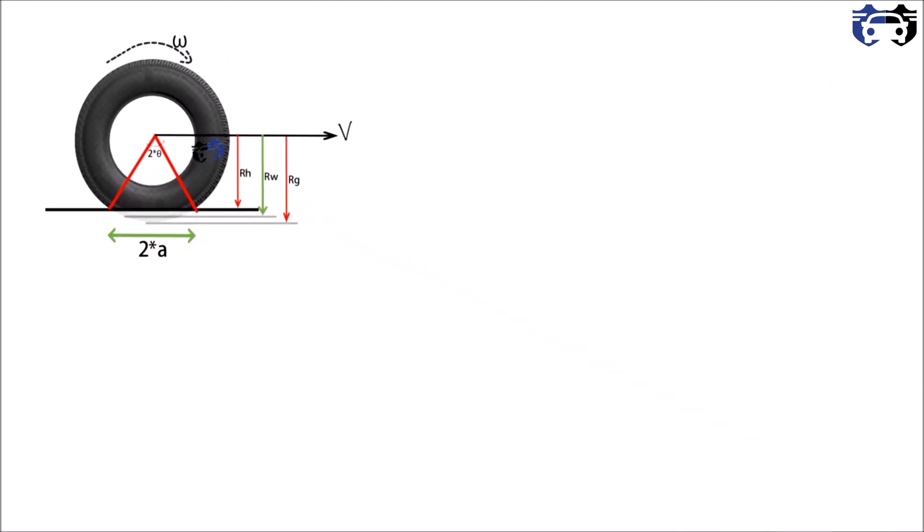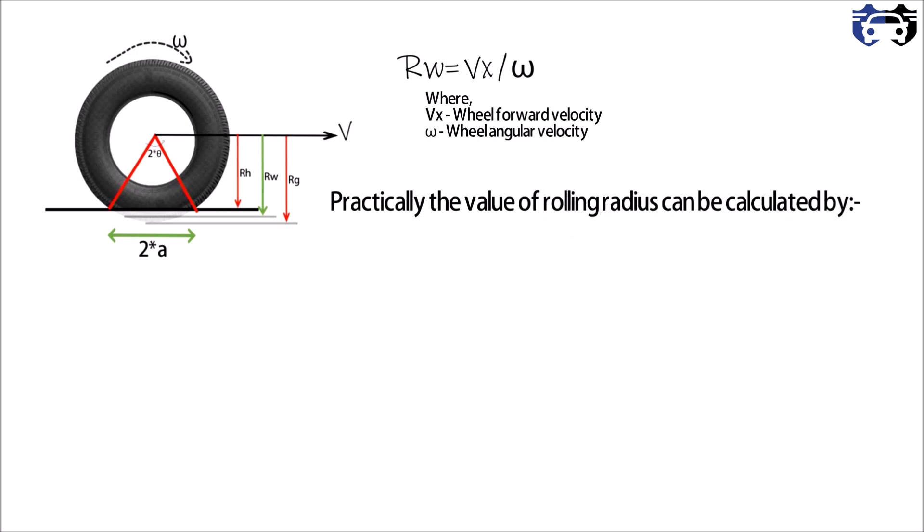So this is our diagram, and we know that the velocity can be written as R into omega. So we can write the rolling radius equals to Vx divided by omega, where Vx is the wheel forward velocity and omega is the wheel angular velocity.